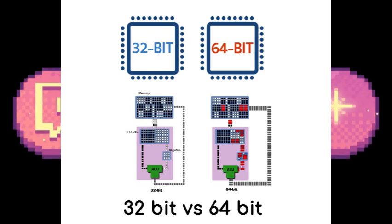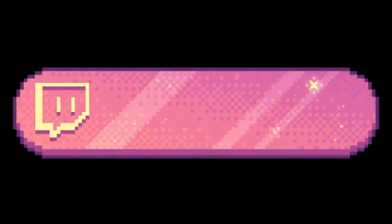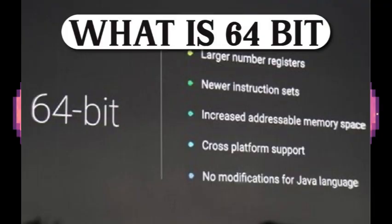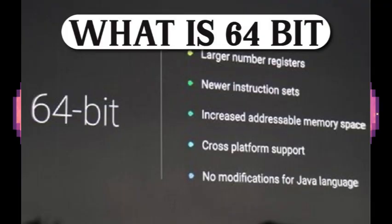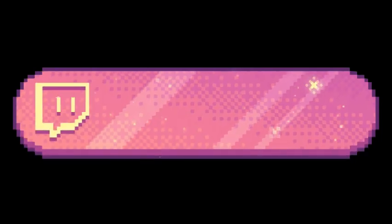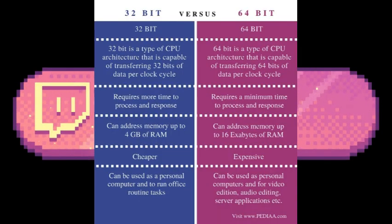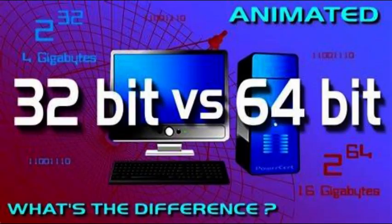A major difference between 32-bit processors and 64-bit processors is the number of calculations per second they can perform, which affects the speed at which they can complete tasks. 64-bit processors can come in dual-core, quad-core, 6-core, and 8-core versions for home computing. Multiple cores allow for an increased number of calculations per second, which can increase processing power and help make a computer run faster. Software programs that require many calculations to function smoothly can operate faster and more efficiently on multi-core 64-bit processors.